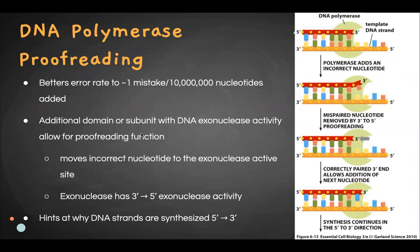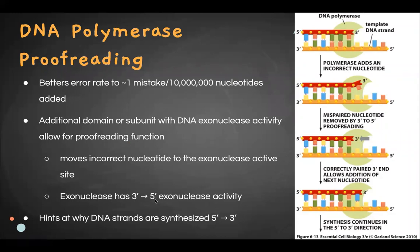DNA polymerase proofreading is an additional domain or subunit with DNA exonuclease activity. It moves the incorrect nucleotide into a separate active site. The exonuclease then has three-prime to five-prime activity. You can see that the template strand is in orange and the strand being built in red — building goes five-prime to three-prime.